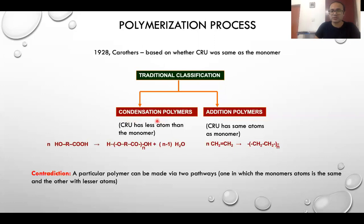When we say condensation polymer, it basically means that if your polymer has constitutional repeating units having fewer atoms than the monomer, then those polymers would be classified under condensation polymers. If the constitutional repeating unit has the same number of atoms as the monomer, then those would be classified under addition polymers.